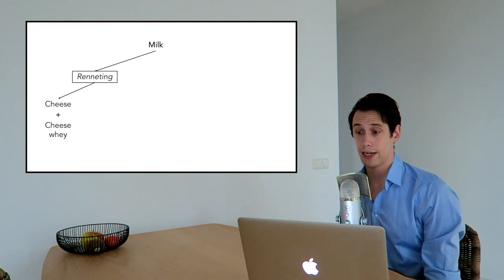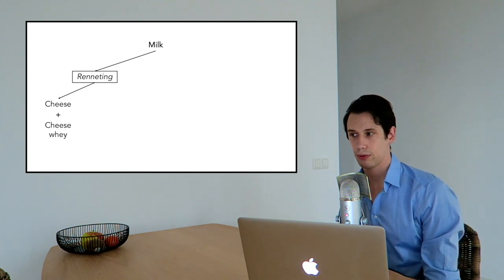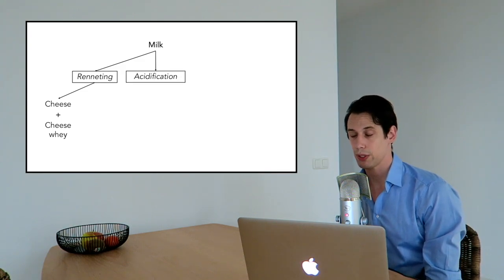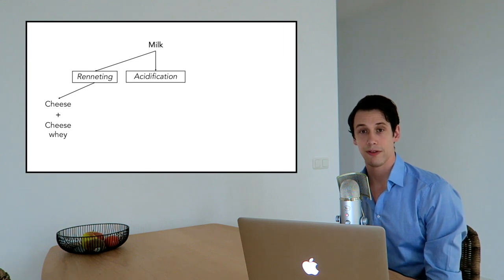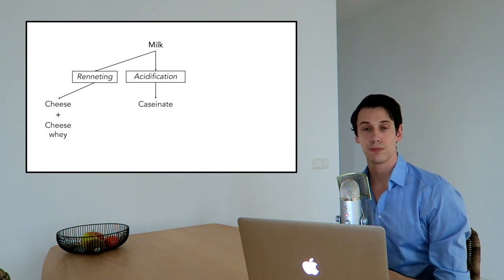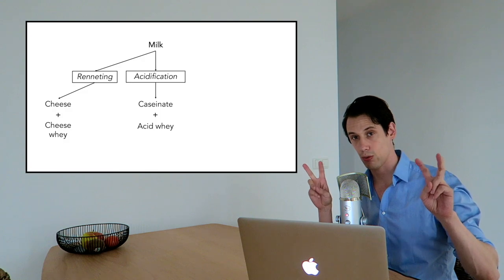Now, another way, no pun intended, to produce whey is by the addition of acid to milk and this will result in the formation of casein protein and again, you're left with fluids with proteins in it and these proteins are called acid whey.